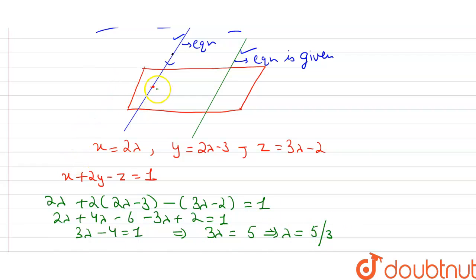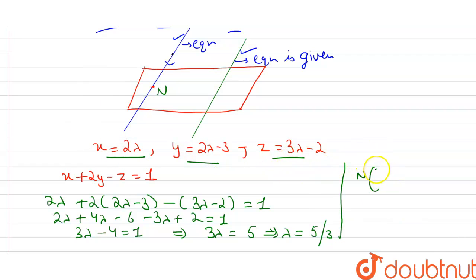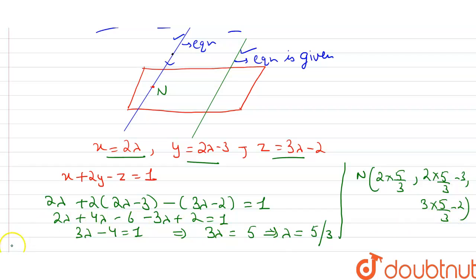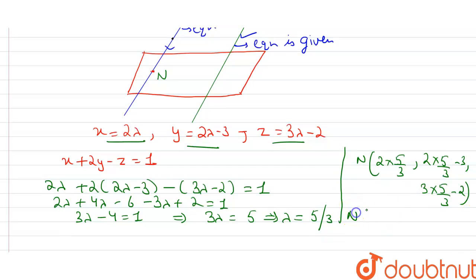Let this point be N. The coordinates of N are: x = 2×(5/3) = 10/3, y = 2×(5/3) - 3 = 10/3 - 3 = 1/3, and z = 3×(5/3) - 2 = 5 - 2 = 3. So point N = (10/3, 1/3, 3).